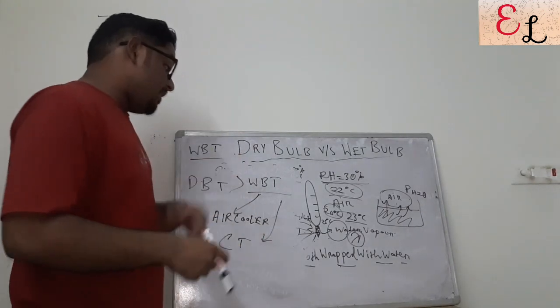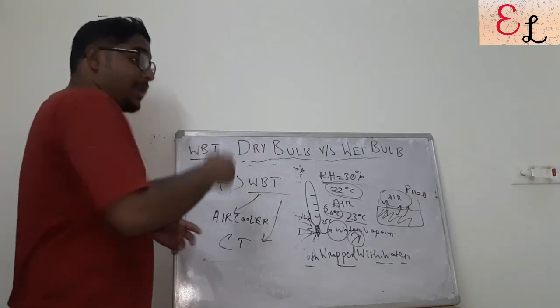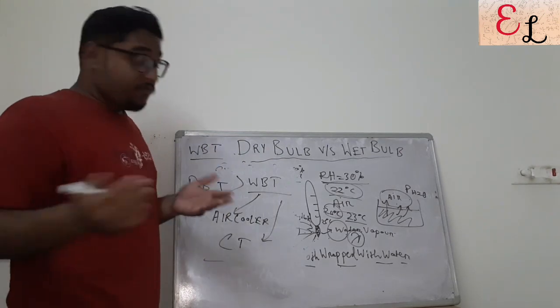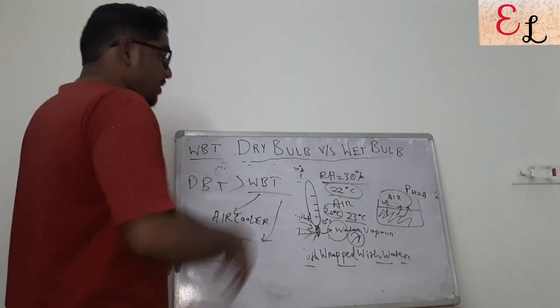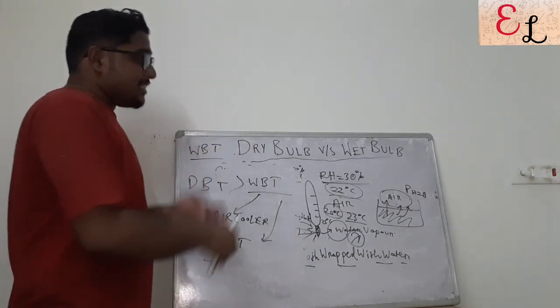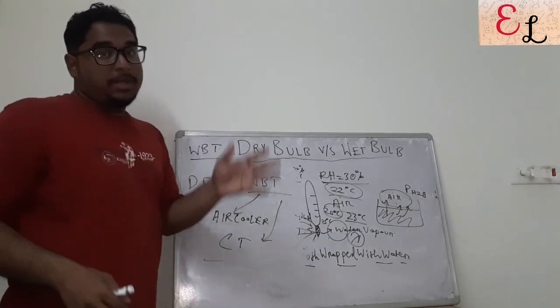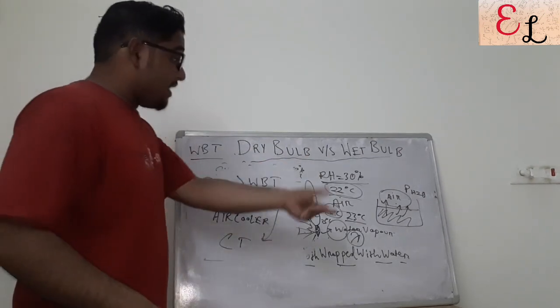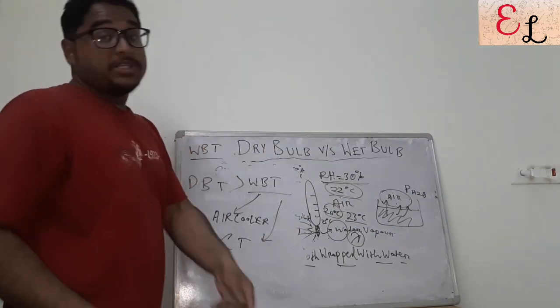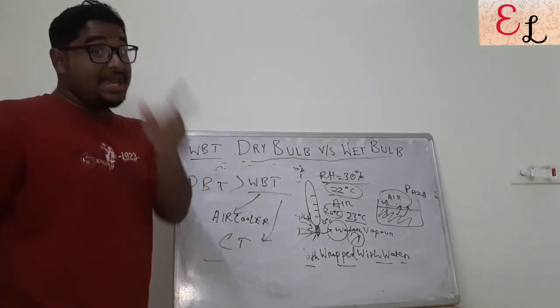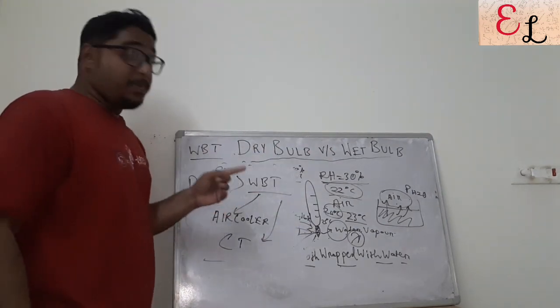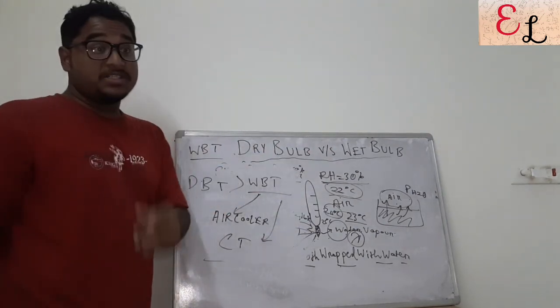The same principle applies to an air cooler and a cooling tower — all follow this same principle. The final temperature of water or air achieved is the wet bulb temperature. This is the concept of wet bulb temperature and why dry bulb temperature is always higher than wet bulb temperature.